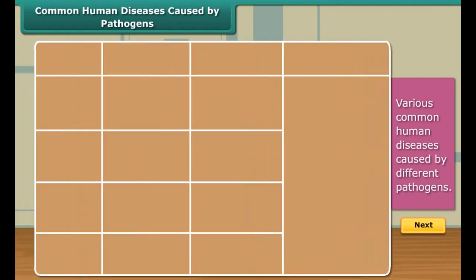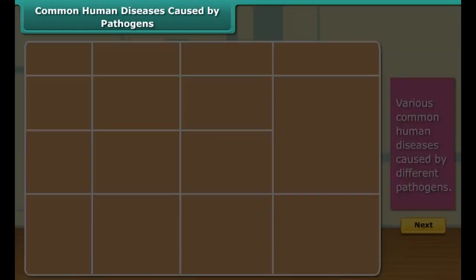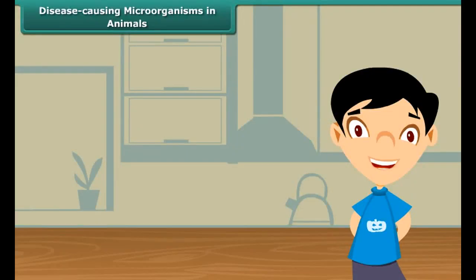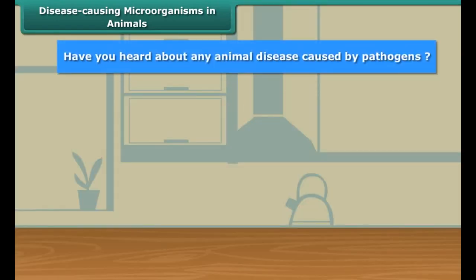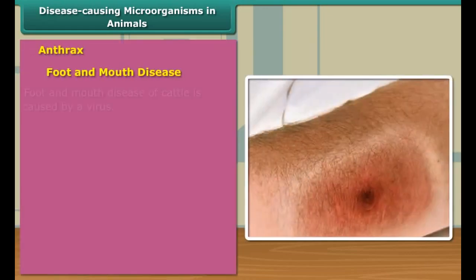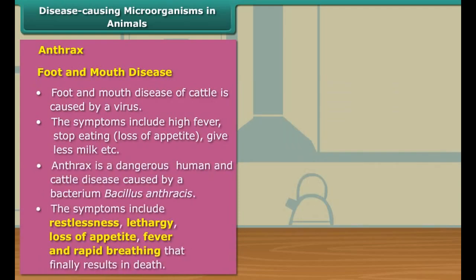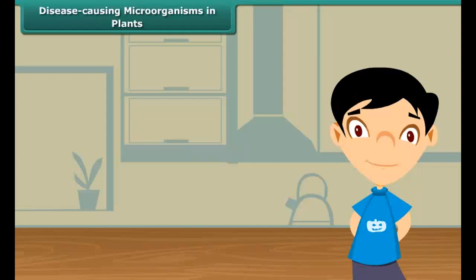Here is a list describing various common human diseases caused by different pathogens. Now let's move on to diseases in animals — anthrax and foot and mouth diseases are common examples. Anthrax is a bacterial disease caused by Bacillus anthracis, while foot and mouth disease in cattle is caused by a virus.